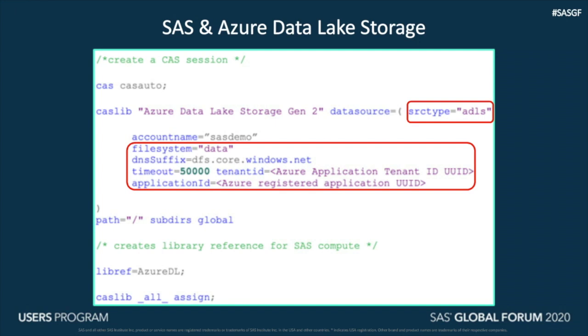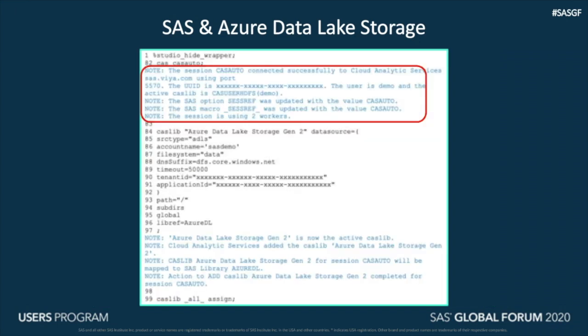A SAS library is also created using Librefs, so traditional SAS data sets as well as in-memory tables can be loaded or saved. If you look at the SAS log of the successful execution, this SAS Viya in-memory cluster has three nodes — one controller and two worker nodes — which now has a CAS library reference to the ADLS Gen 2 data storage in Azure.